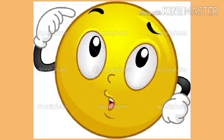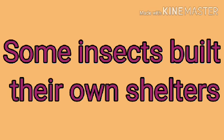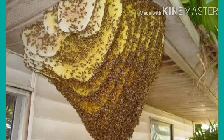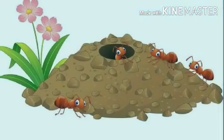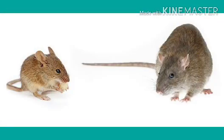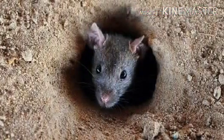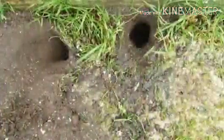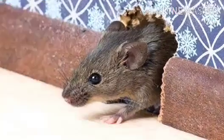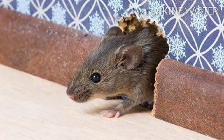Some insects also build their own shelters. For example, honeybees build their honeycombs on trees or under the roof of overhanging cliffs. Ants build their anthills on their own. Rats and mice live underground in fields — they dig into the soil and make holes and burrows to live in. Rats and mice also live in areas where people live, making holes in the walls or under the floor in houses.